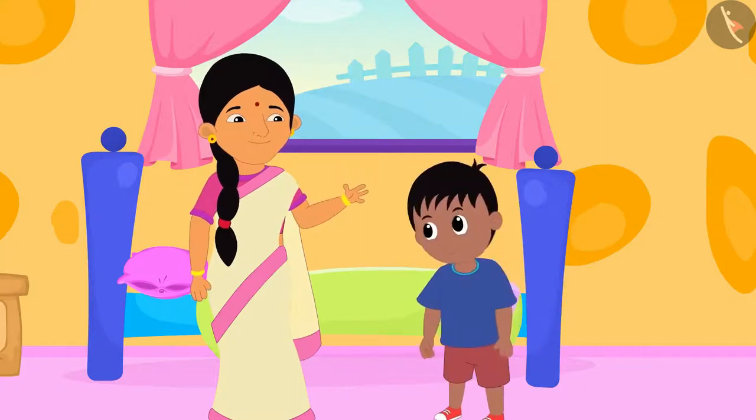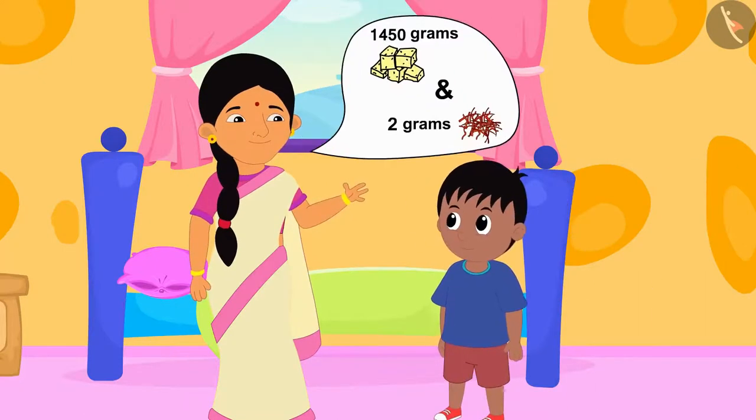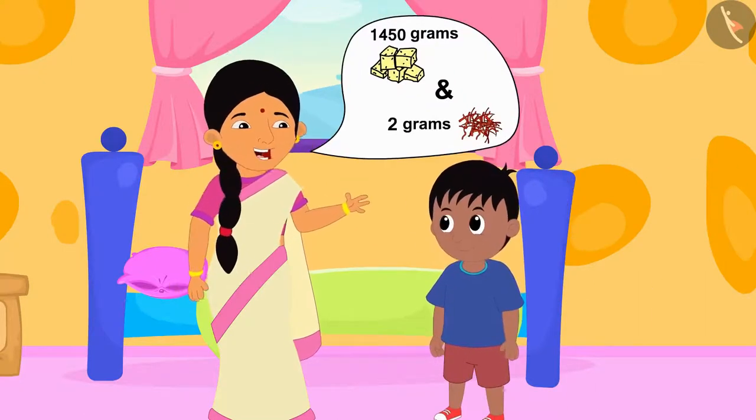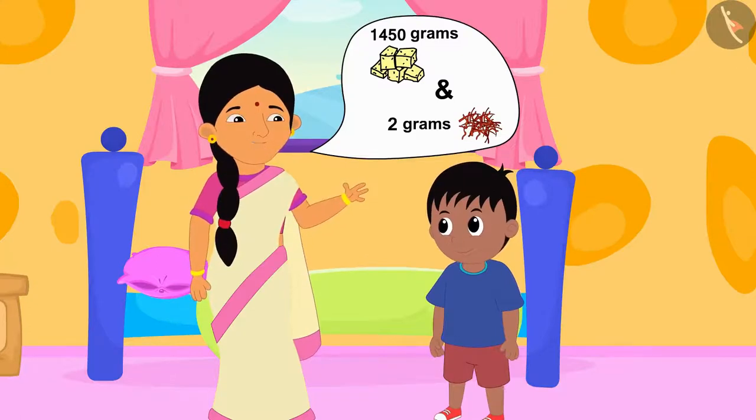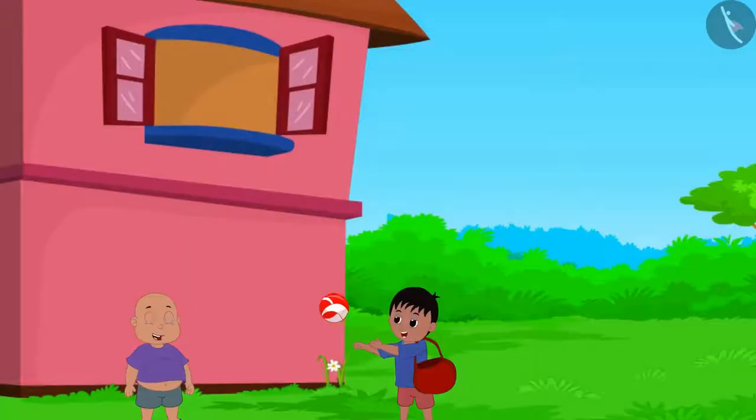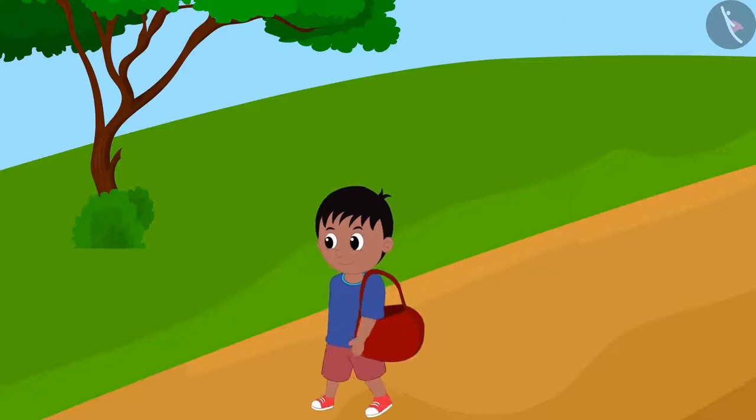Raju's mother asked him to buy 1450 grams of paneer and 2 grams of saffron from Appu's shop. Raju kept playing on the way and finally reached Appu's shop.